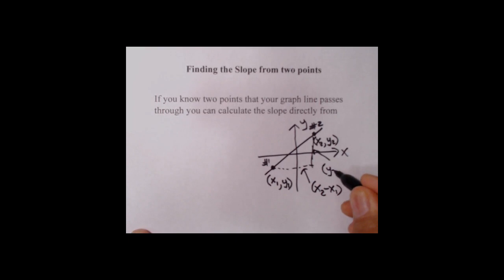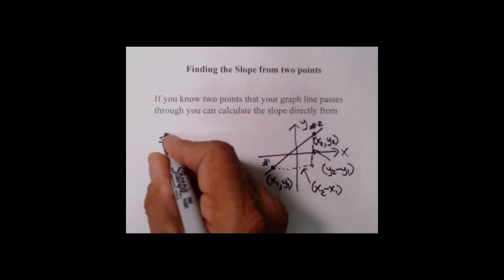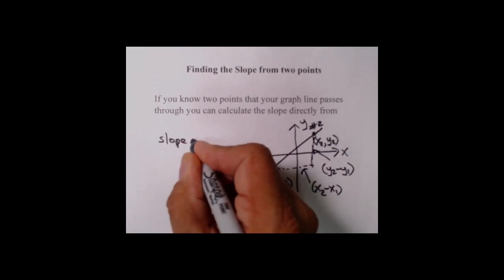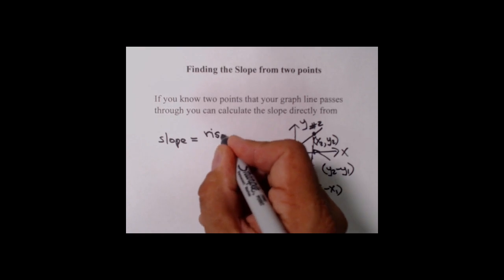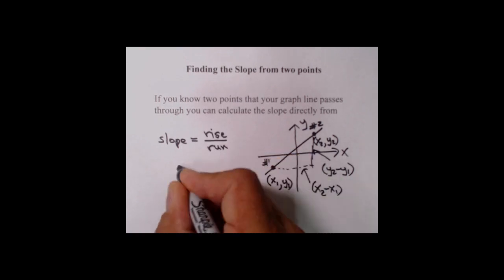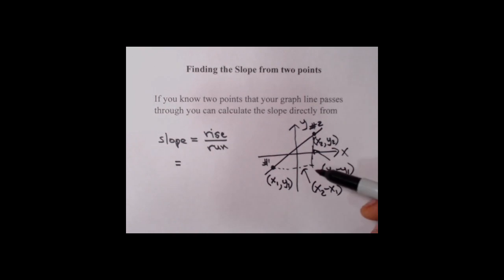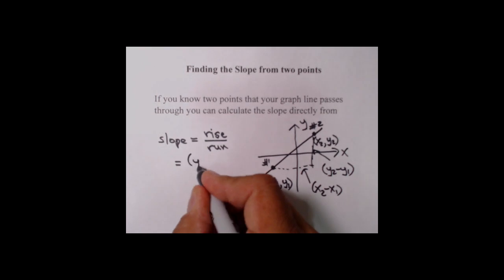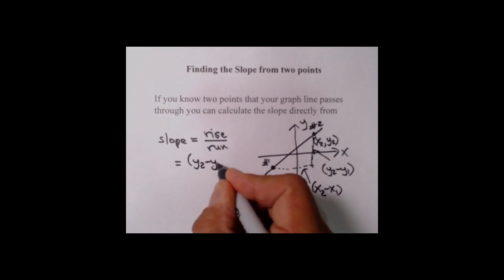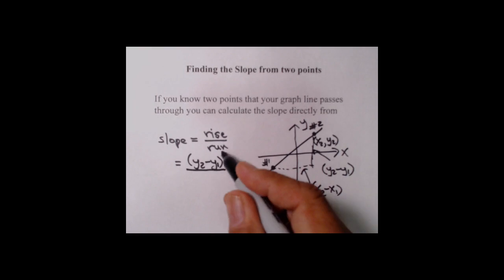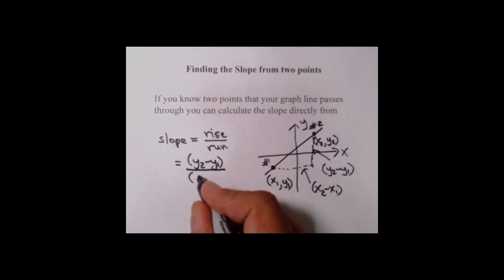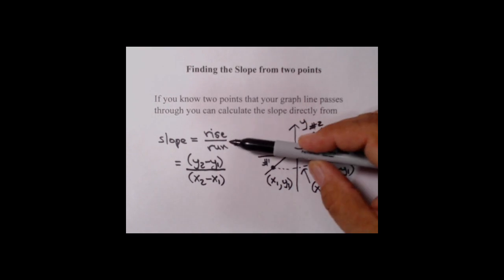The rise here is the difference in the Y values, Y2 minus Y1. So we can see where we're going to get this equation. Remember, slope from the engineers equals rise over run. The rise is the difference in the Y values, Y2 minus Y1, and the run is the difference in the X values, X2 minus X1.